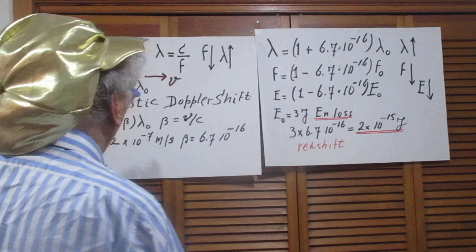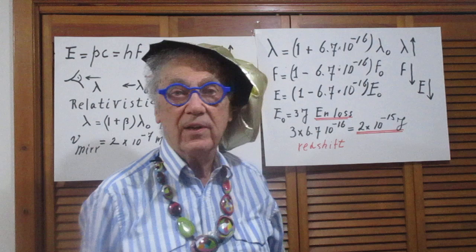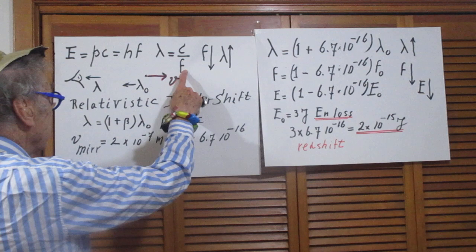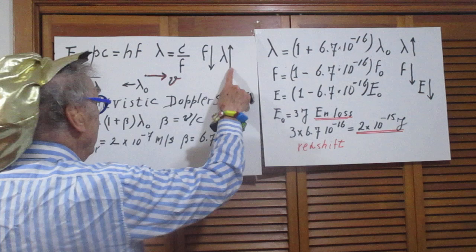Okay, so the energy is PC, it is also H times F. H is Planck's constant, F is the frequency. The wavelength is the speed of light divided by F, so when the frequency goes down, the wavelength goes up.